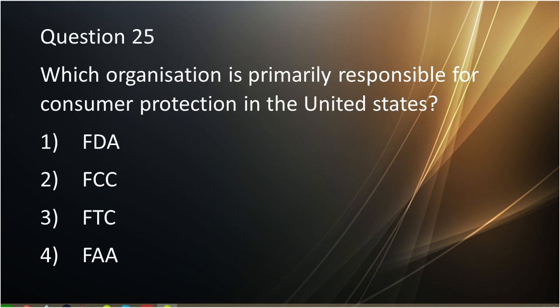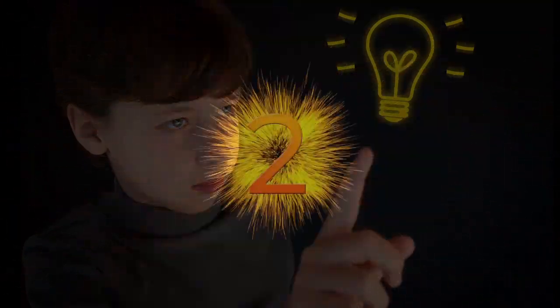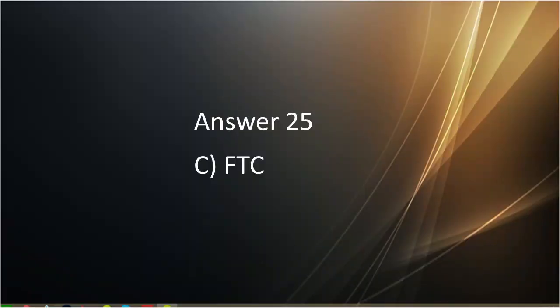Question number twenty-five: Which organization is primarily responsible for consumer protection in the United States? First is FDA. Second is FCC. Third is FTC. Fourth is FAA. Answer to question number twenty-five is FTC.